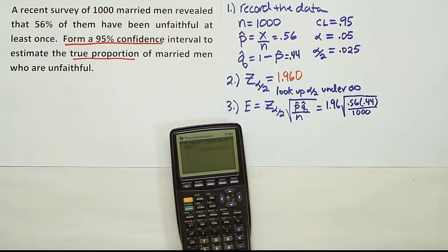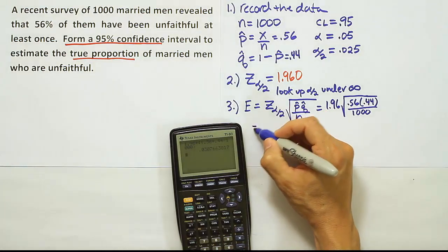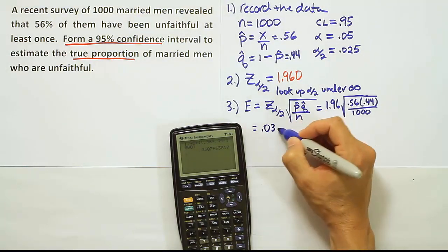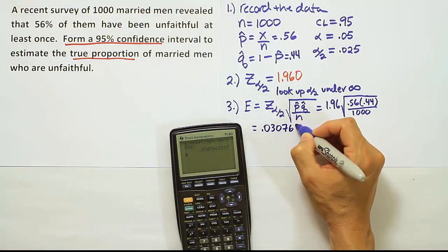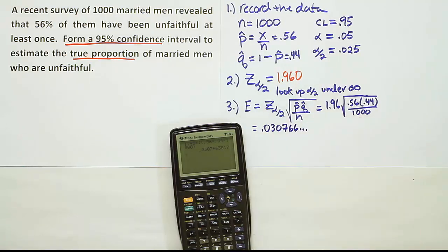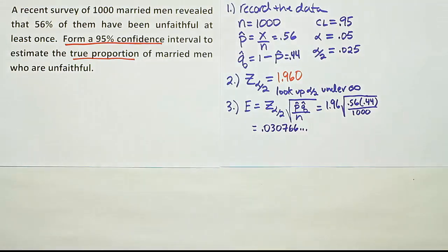When we do that, we get 0.030766 for the error. I'm going to store that in our calculator and use it in the next step.